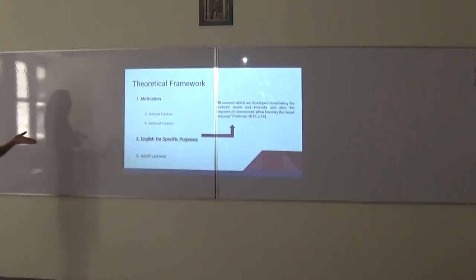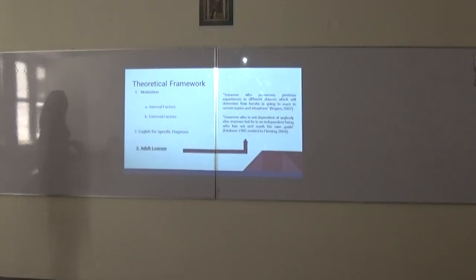Also, we need to understand the definition of English for Specific Purpose, considering that is the methodology that is assigned to this class. Raman in 2015 defined ESP as all courses that have been developed, considering the student's needs and interests, and also purpose of assessment when learning the type of language. And we need to understand what an adult learner is, considering that their mind works different to other types of learners. Rogers defines an adult learner as someone who possesses previous experiences in different classes, which will determine how they will react to specific topics or situations. And Elias, in 1982, which was revised by Flemming in 2004, defined an adult learner as someone who is not dependent on anybody else anymore, but is an independent being who has set and reached his own goals.